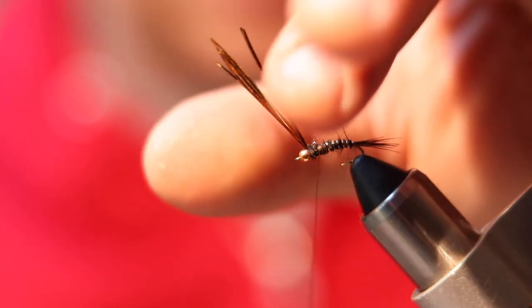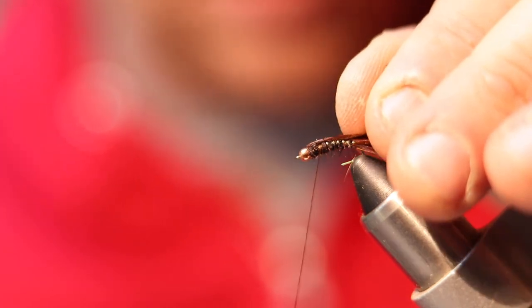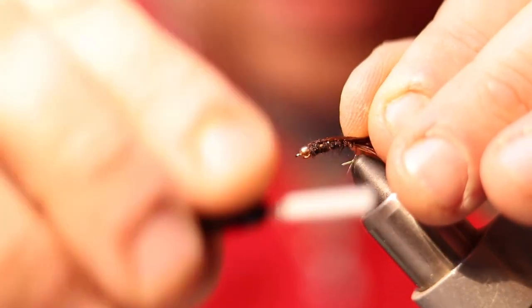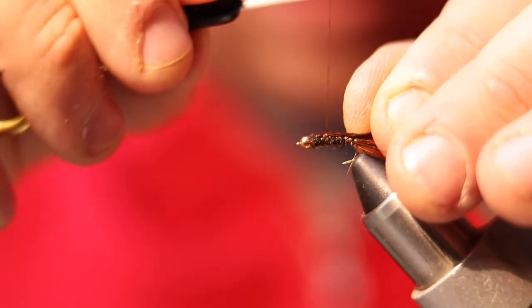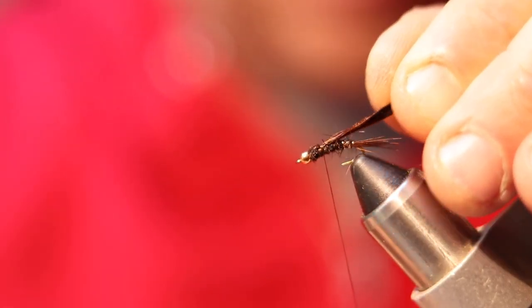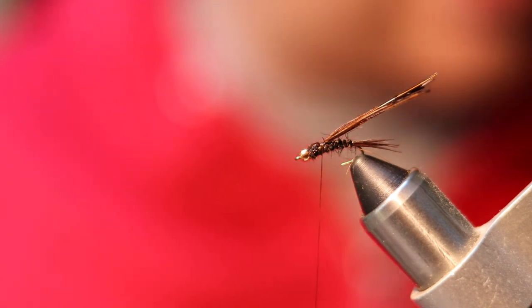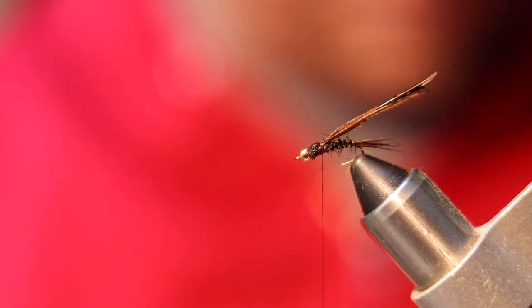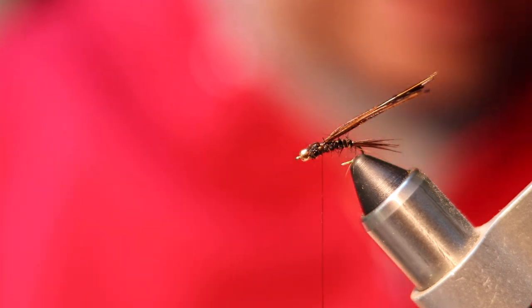This step is going to take your pheasant tail here, and you're going to fold it back and wrap it on. What I do is I kind of wrap back over where I ended that rib and anchor it down. Now we need to get a little more squirrel fur, and when I say the tiniest bit, I mean like the smallest amount that you can pinch.